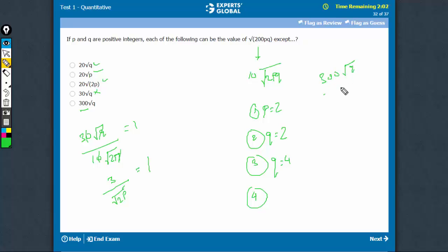300 root q upon 10 root 2pq. The qs can go, 0 can go. 30 upon root 2p is equal to 1. So root 2p is equal to 30. So p is equal to 450 here. 900.